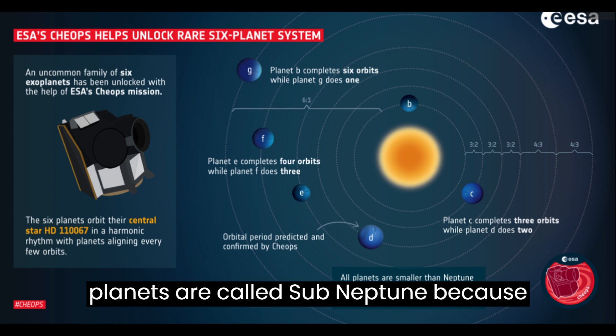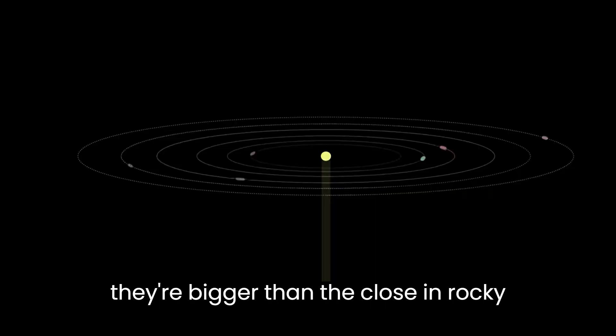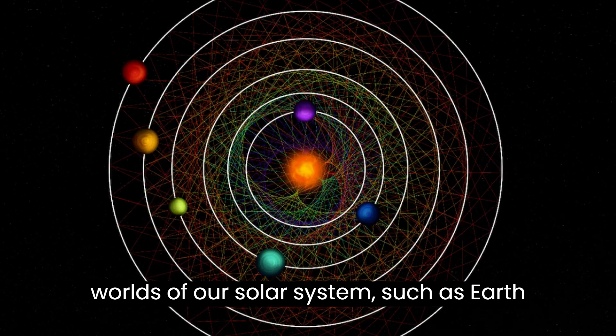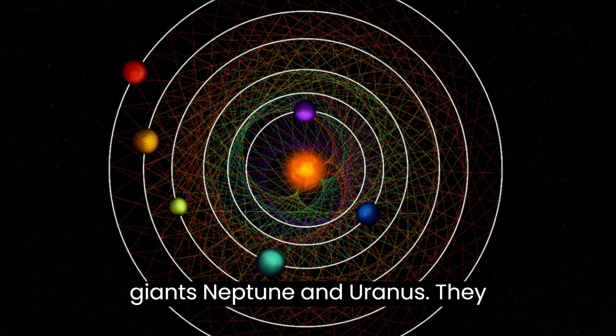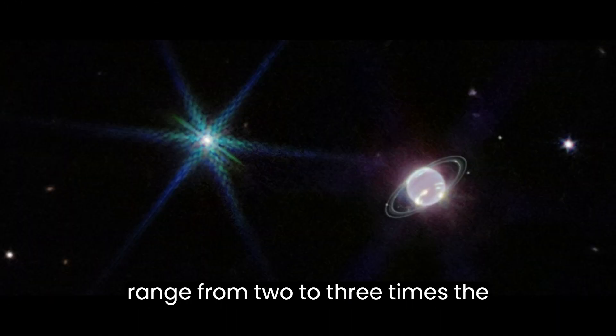The new planets are called sub-Neptune because they're bigger than the close-in, rocky worlds of our solar system, such as Earth and Venus, but not as big as the ice giants Neptune and Uranus. They range from two to three times the diameter of Earth.